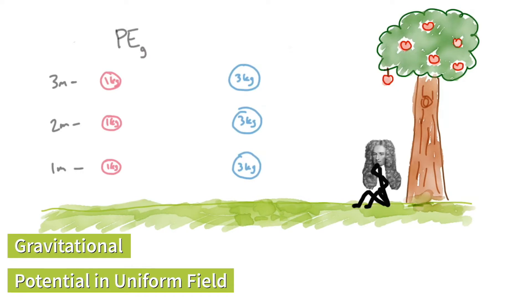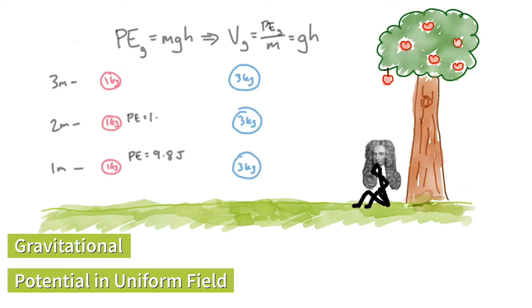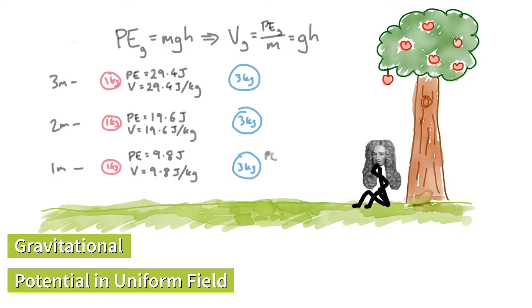Let's clarify this idea with gravitational potential in a uniform field, using the example of Newton sitting under his tree. We have different points in space with different masses. We know potential energy equals mgh for a uniform field. The gravitational potential Vg in a uniform field is potential energy per mass, which cancels the small mass out, giving us just gh. The potential energy for one kilogram at one metre is 9.8 J, at two metres is 19.6 J, and at three metres is 29.4 J. So the potential at those points is 9.8, 19.6, and 29.4 joules per kilogram respectively.